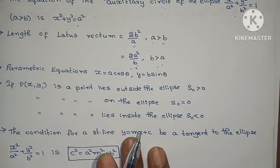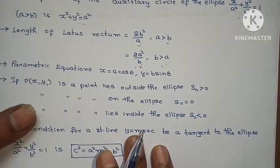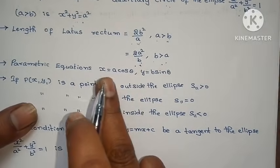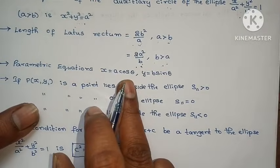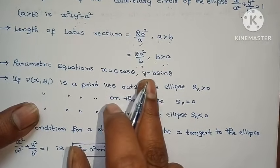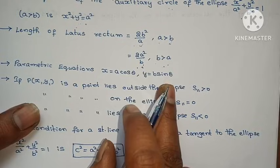The parametric equations of the ellipse are: x equals to a cos theta, y equals to b sin theta.